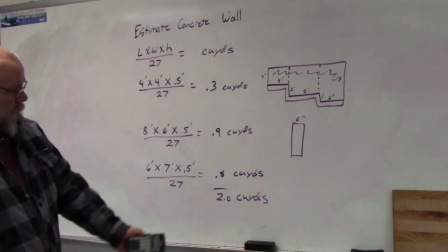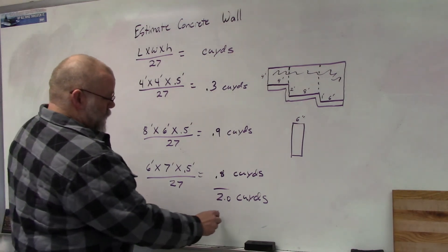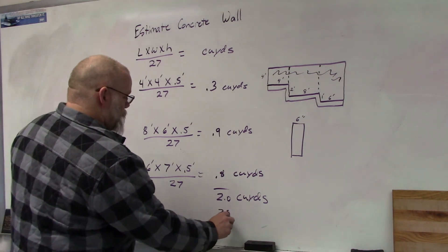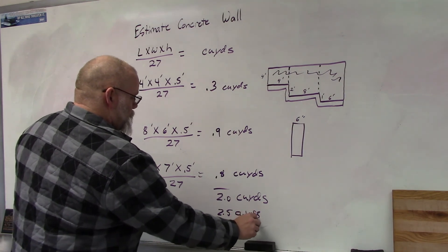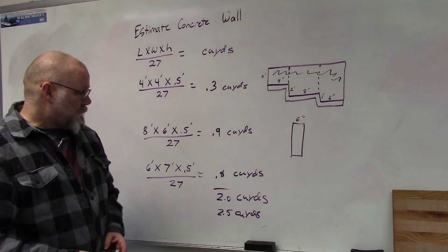We could add a little bit of waste. Maybe order 2.5 cubic yards since it's a small amount. Just add a cubic yard and you should be pretty good for waste.